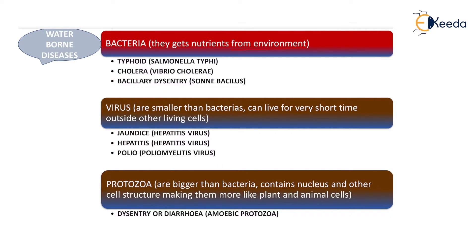Bacteria are generally single-celled organisms and they get nutrients from the environment. The various types of diseases caused by bacteria are: first, Typhoid, which is created by Salmonella Typhi. Similarly, Cholera, whose bacteria is Vibrio cholerae. And Bacillary Dysentery, whose bacteria is Shigella (Sone Bacillus).